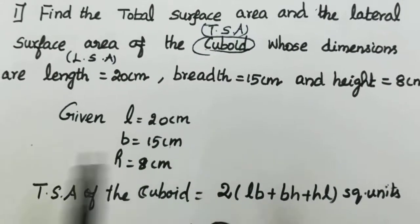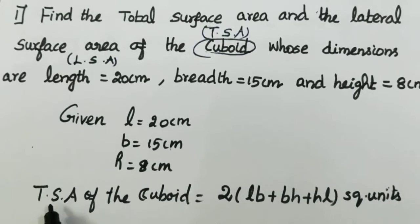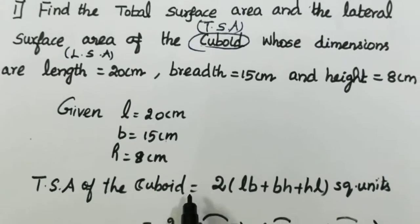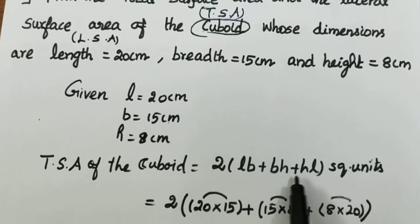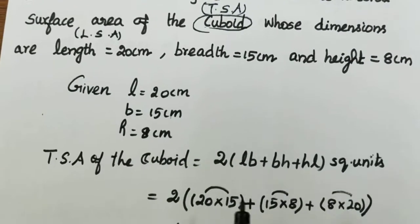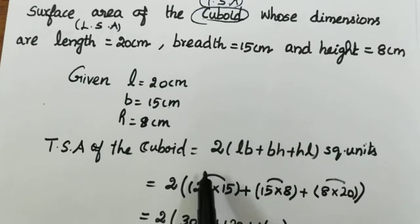Next we are going to write the formula. Total surface area of the cuboid is equal to 2 into bracket lb plus bh plus hl square units. Next, substitute the values.